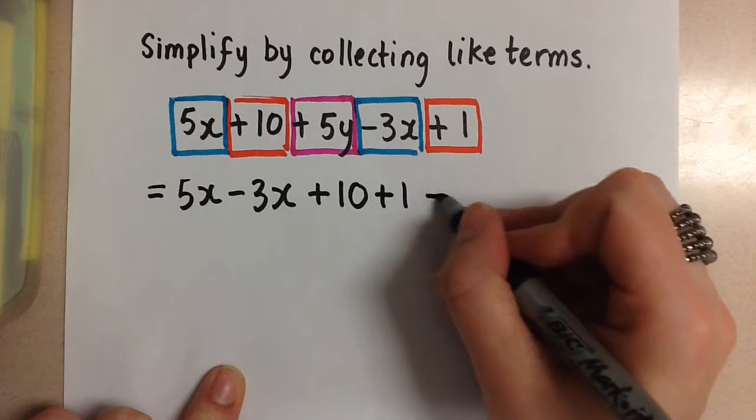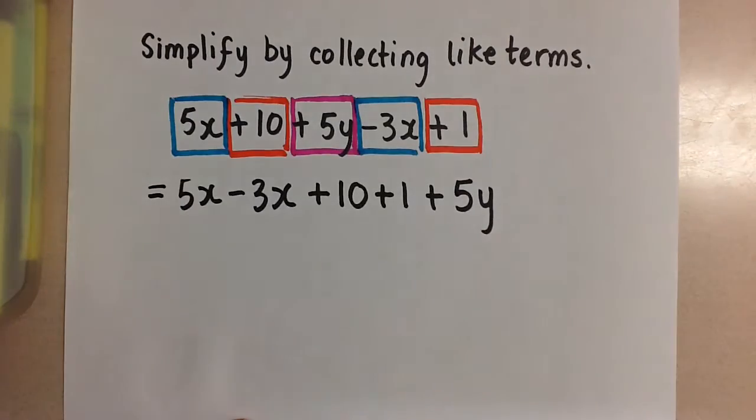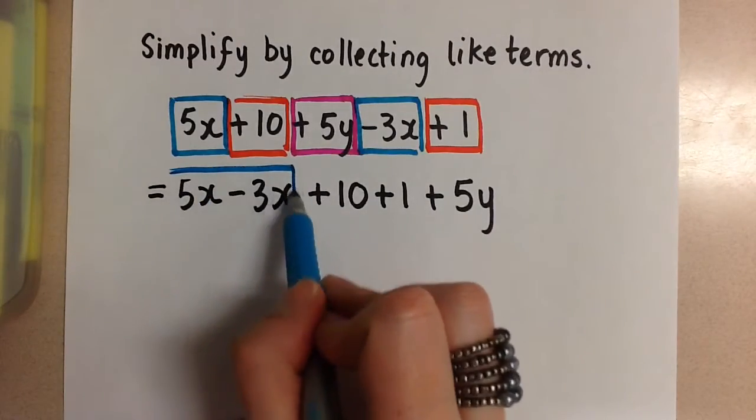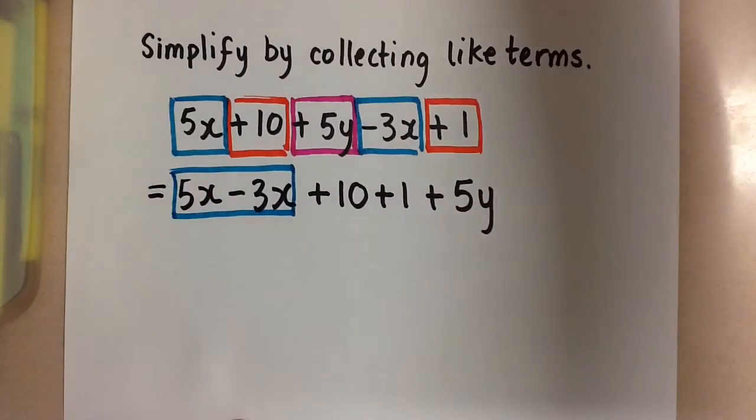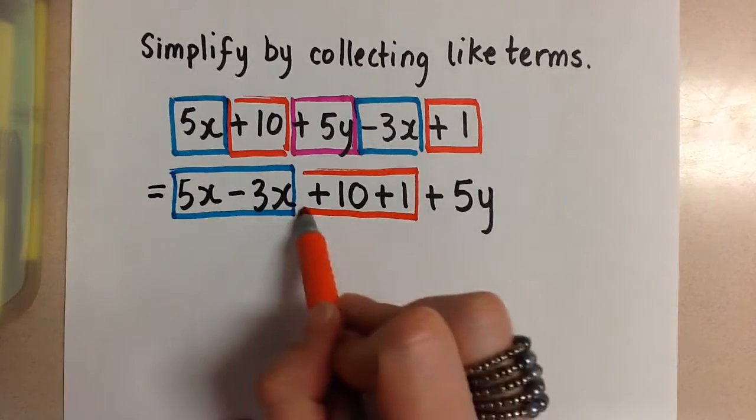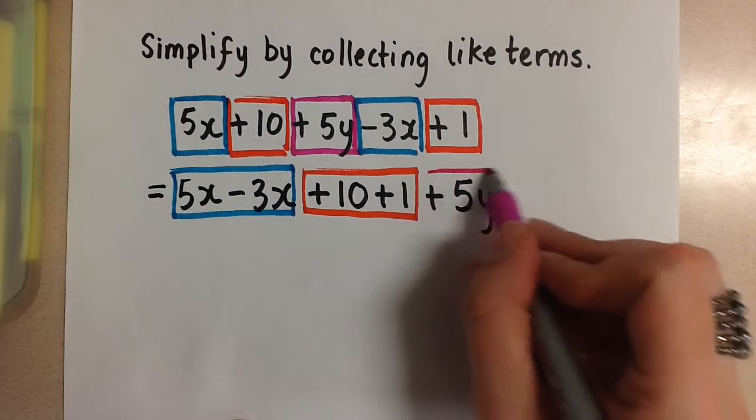So I put the x's together and then I can put my constant terms together and then I'm left with the 5y at the end which doesn't have anything to combine with. So now you see that here are my x terms, here are my constant terms and then here is my y term.